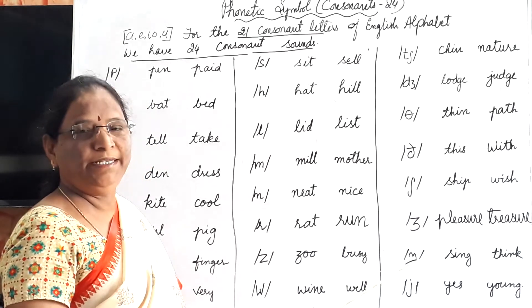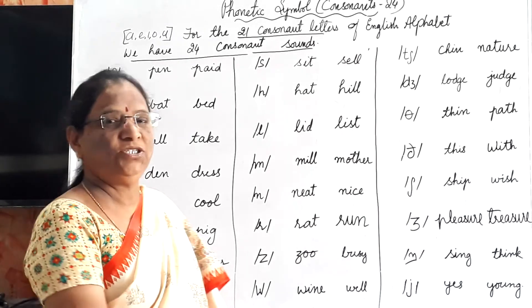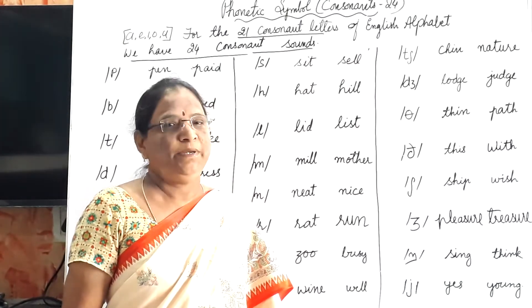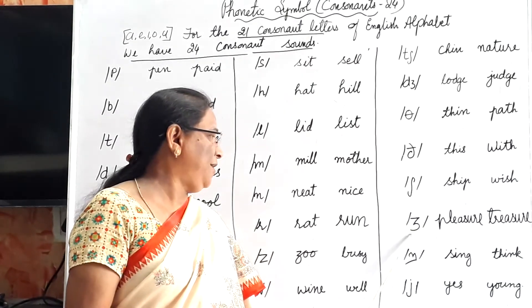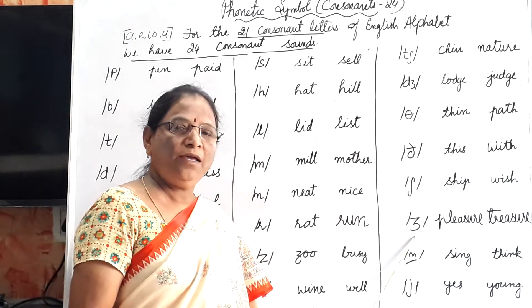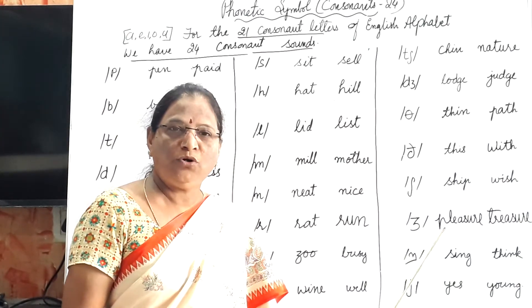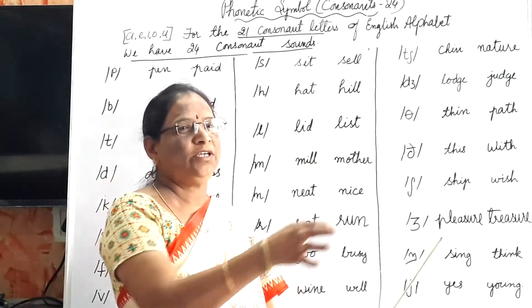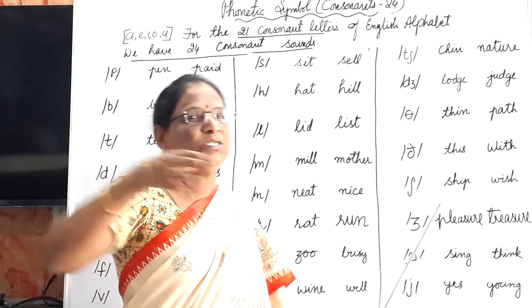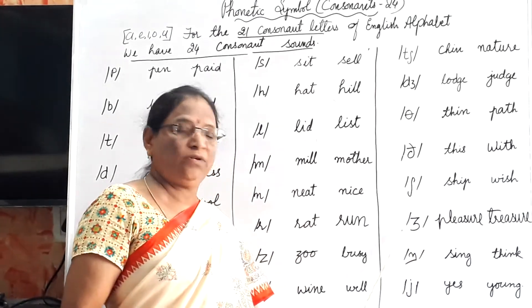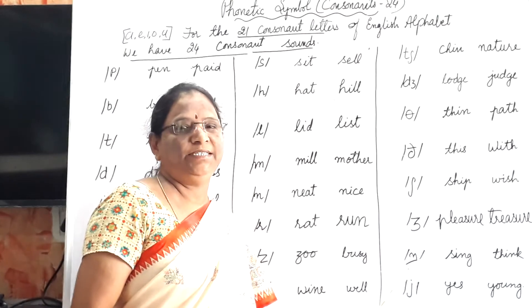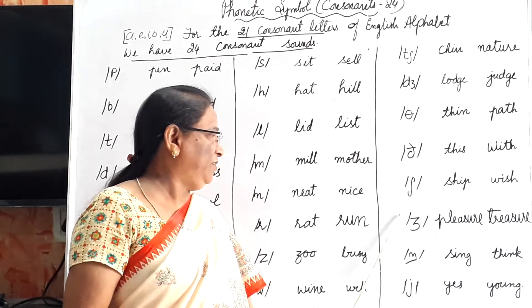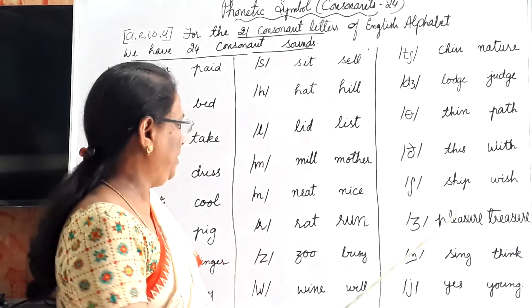Next is /dʒ/ and the /ŋ/ (ng) sound. The /ŋ/ sound is not in our Indian language, so many times we make mistakes. Instead of /ʒ/, we Indians pronounce it differently. The /ʒ/ sound is like the sound of an aeroplane starting to move. The /ŋ/ sound is also strange for Indians, so we should be very careful when pronouncing these symbols.